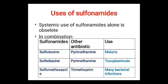Systemic use of sulfonamides alone is now obsolete; they are used in combination. Sulfadoxine plus pyrimethamine is given in malaria. Sulfadiazine plus pyrimethamine is given in toxoplasmosis. Sulfamethoxazole and trimethoprim combination, called cotrimoxazole, is given for many bacterial infections.